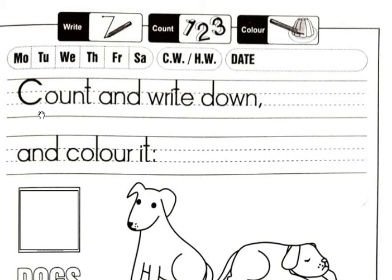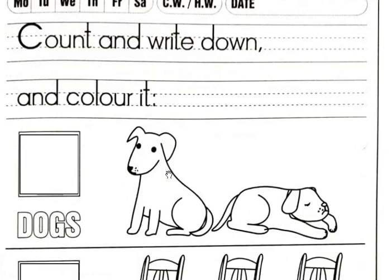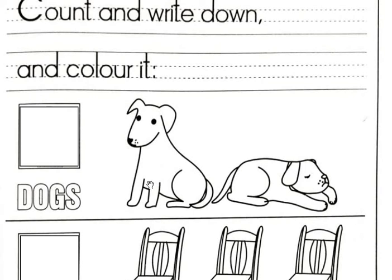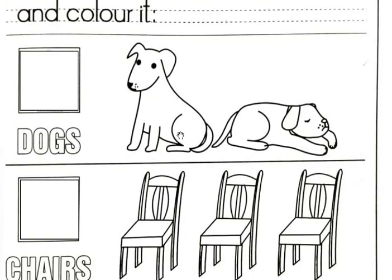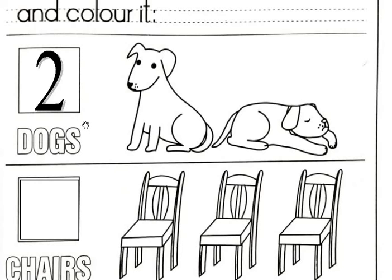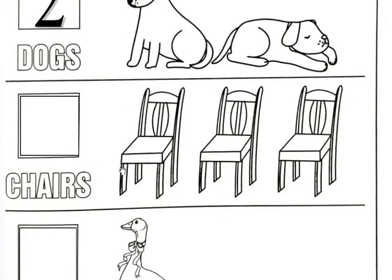Page number 31 — the topic is count and write down, and color it. Here they have given you objects. You have to count these objects and write the number in the given box, and after that color the given objects. First one is dogs — how many dogs? Count: 1, 2 — 2 dogs. So you have to write number 2 in the box.